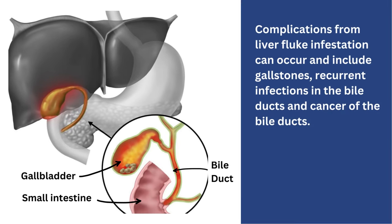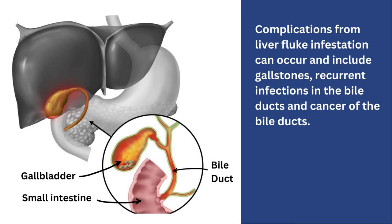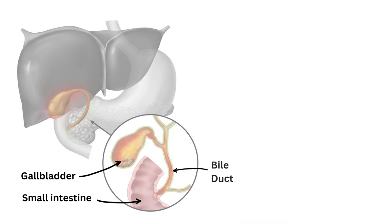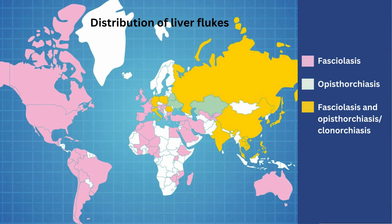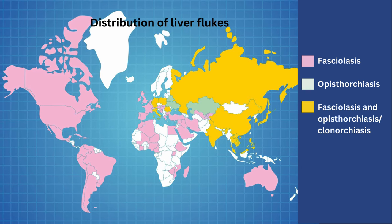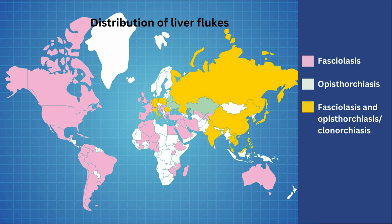Complications from liver fluke infestation can include gallstones, recurrent infections in the bile ducts, and cancer of the bile ducts. Liver fluke infections have been on the rise with an increase in incidence and geographical distribution, possibly due to aquatic food becoming more popular with global consumers.